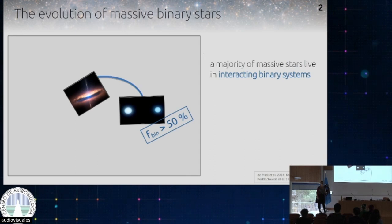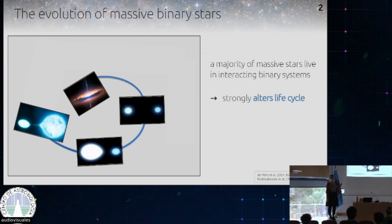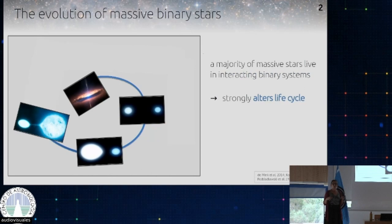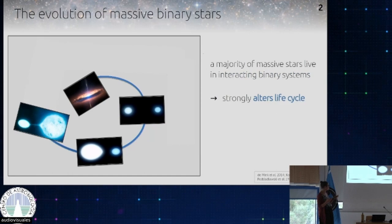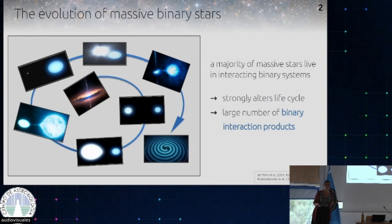That means there's not one star but two stars that orbit around each other. And the evolution that happens to stars doesn't happen as if there was only one star — there's the presence of a companion. There are many different types of channels that can occur in binary systems. I'm only showing one here, where you have a binary system where the two stars are so close that mass transfer occurs, and one of the stars fills its Roche lobe.